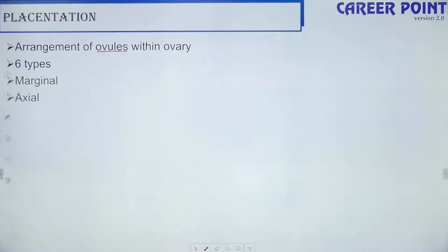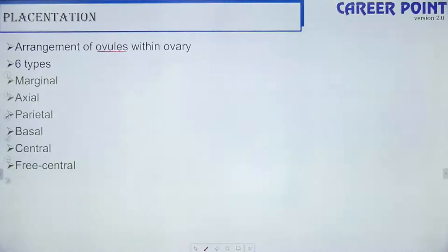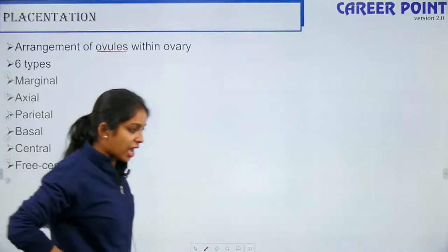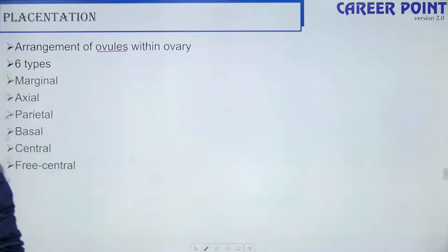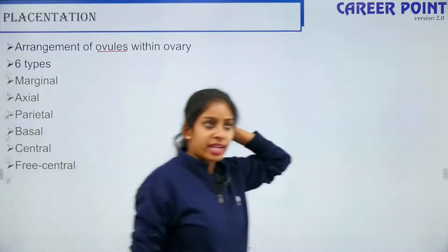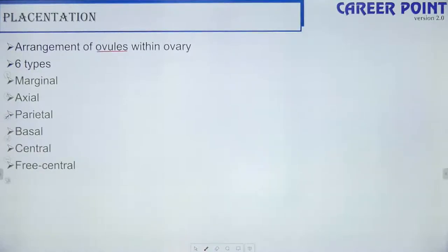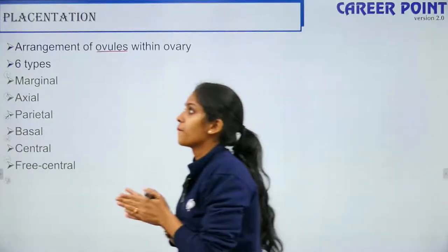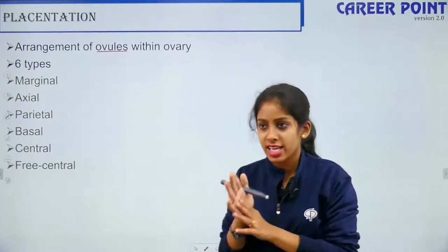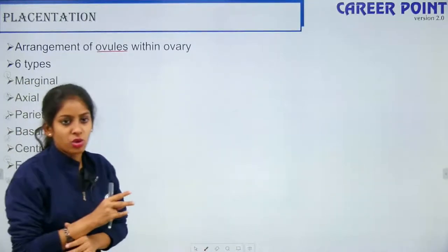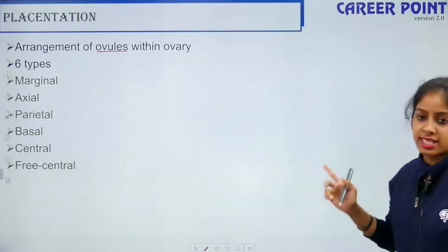Recall the examples for ovary position: hypogynous — ovary is superior — examples are hibiscus, mustard, sunflower (HMS); perigynous — PPR: plum, peach, rose; epigynous — ECG: examples include cucumber and gourd. There are six types of placentation. Marginal — ovules towards the margin. Axial — towards the axis. Parietal — towards the periphery. Basal — towards the bottom. Central — in the middle. Free central — freely suspended in the centre.